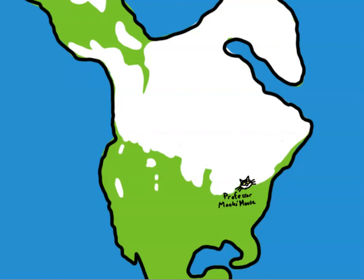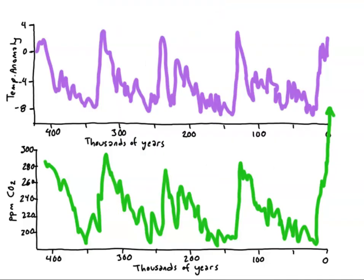All of that water being added to the glaciers during glacial periods lowered sea levels by about 120 meters, creating land bridges between Siberia and Alaska, between Britain and continental Europe, between Australia and New Guinea, and elsewhere. Using those air bubbles in the ice, we can see an important feedback that enhances the effects of these changes in Earth's orbit and tilt.